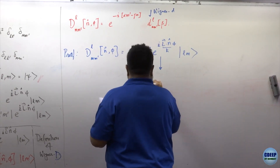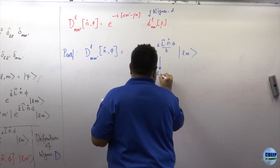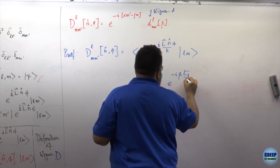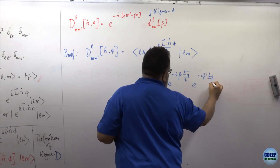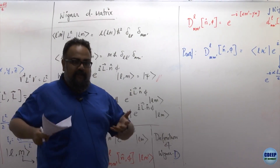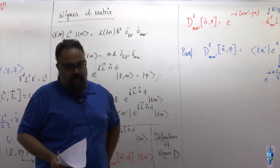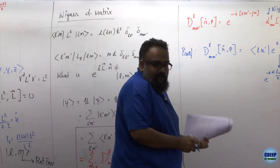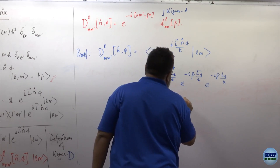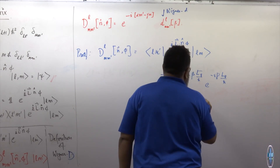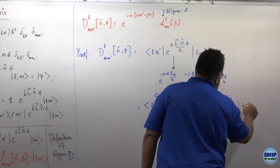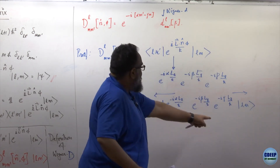This quantity can always be written as e to the minus i·alpha·L_z/ℏ times e to the minus i·beta·L_y/ℏ times e to the minus i·gamma·L_z/ℏ. You see how the Euler angle representation proves to be very powerful, because you have the L_z quantum number sitting around, which means you can immediately evaluate two of the exponentials, since |M⟩ is an eigenvector of L_z.